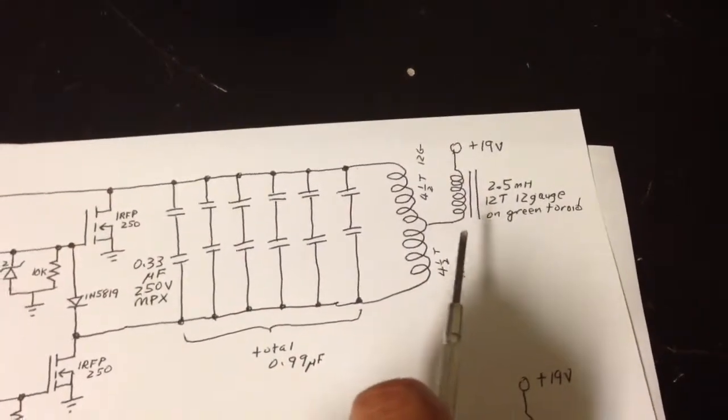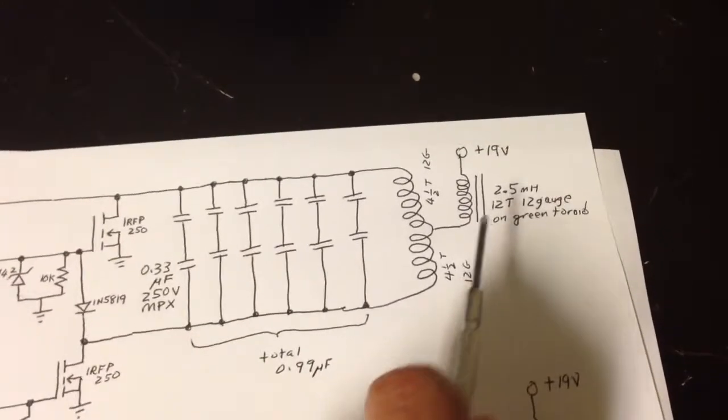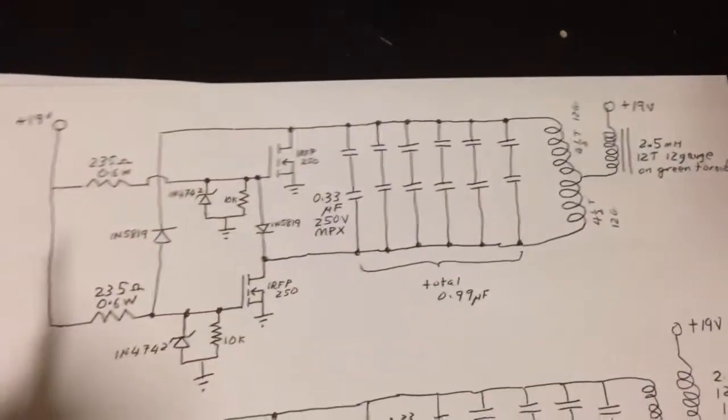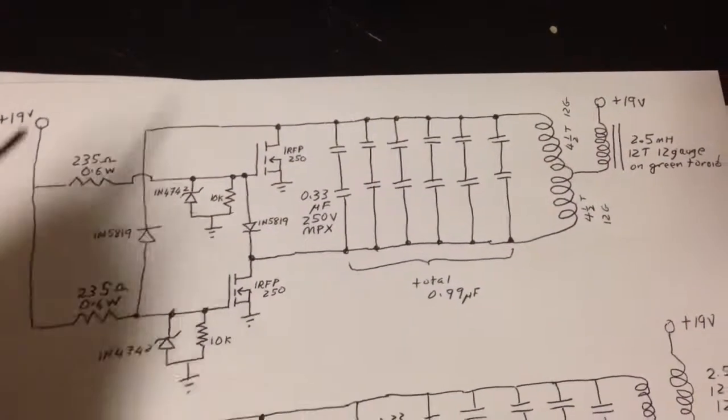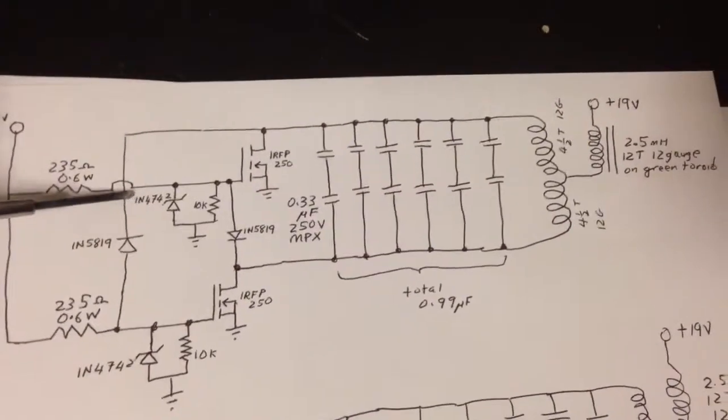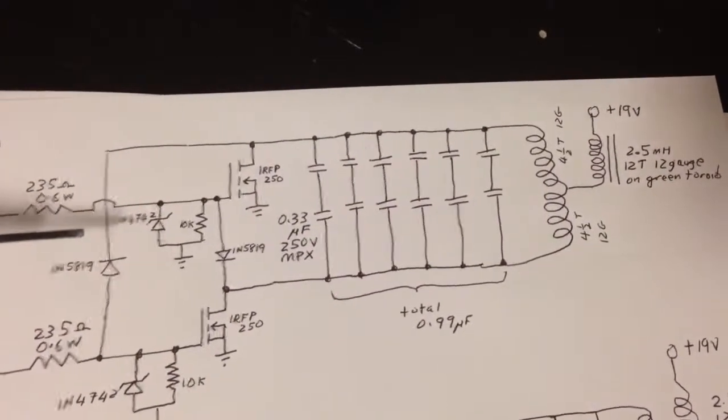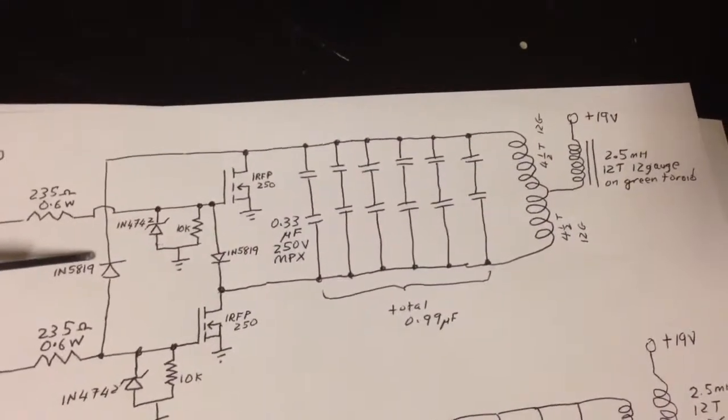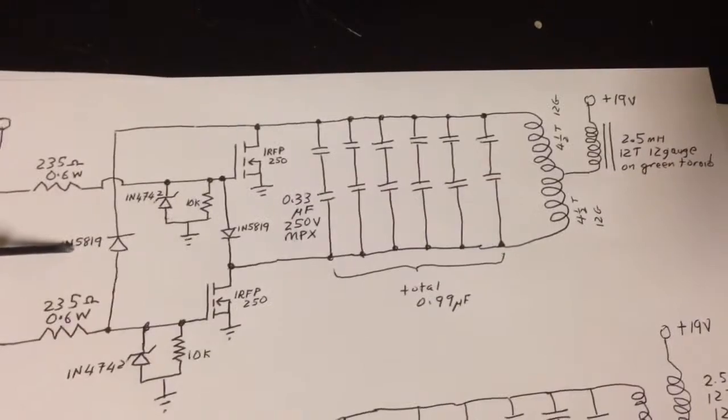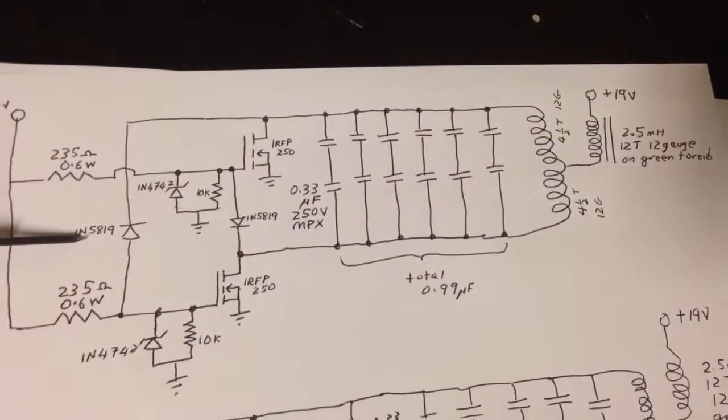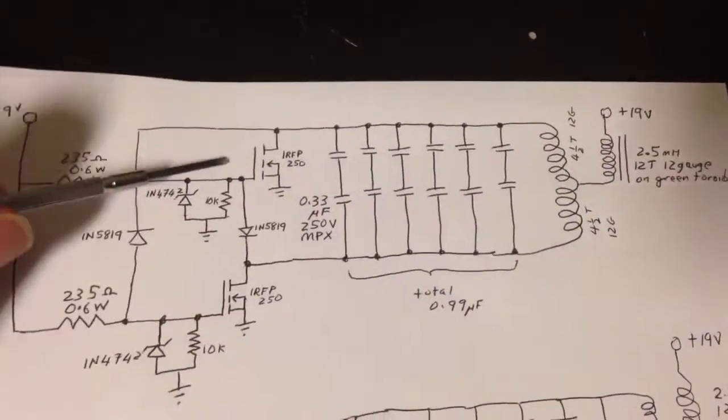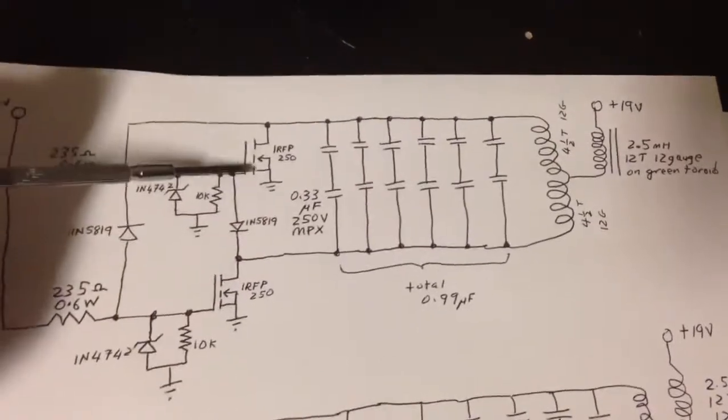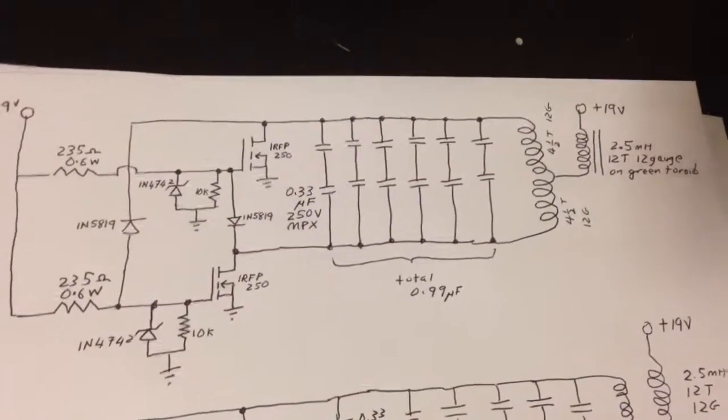It worked great, but the problem I was having is I kept blowing the zeners. The zeners failed repeatedly after just a few minutes, and sometimes immediately on connecting the power source. These Schottky diodes ultimately failed, and then the whole system failed—both MOSFETs, the IRFB250s, failed.